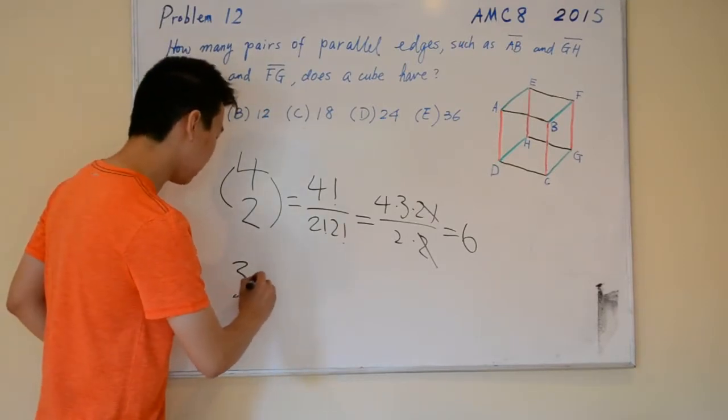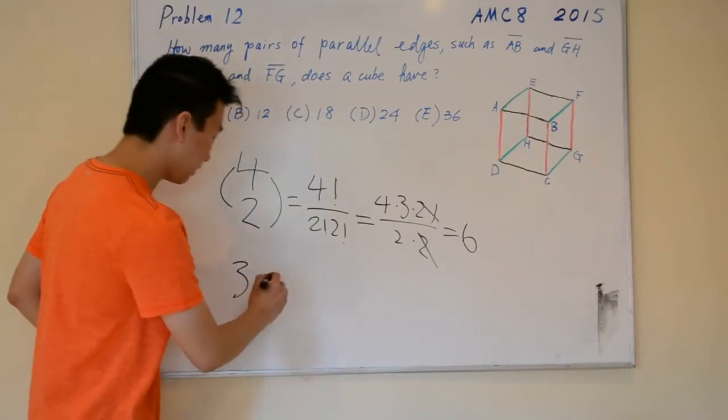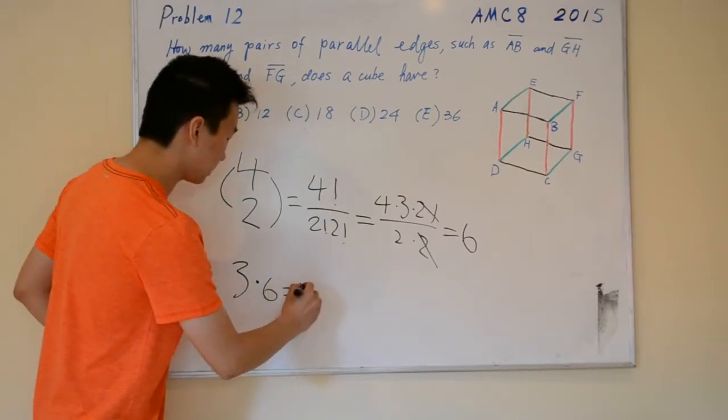So, we have three directions times six pairs per direction. So, this is 18.